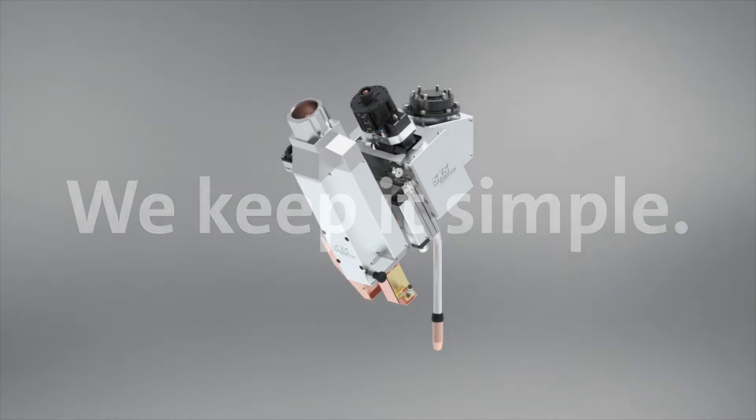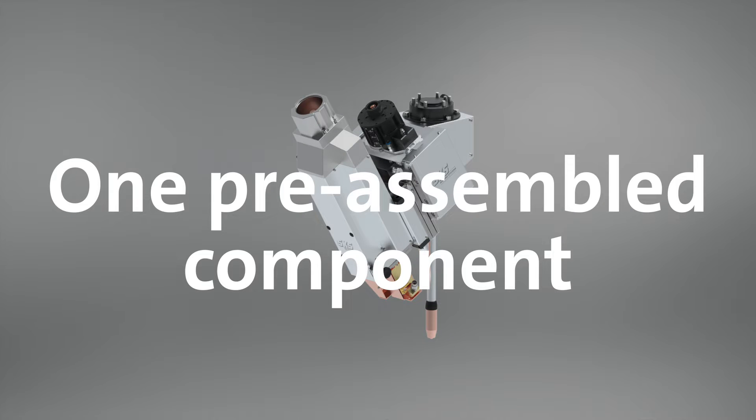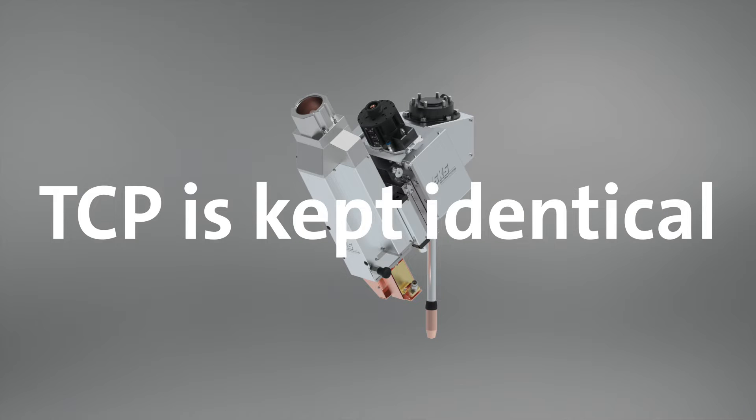We keep it simple. The torch head is supplied as one pre-assembled component in a dust-protected housing. If single parts are changed, TCP is kept identical.